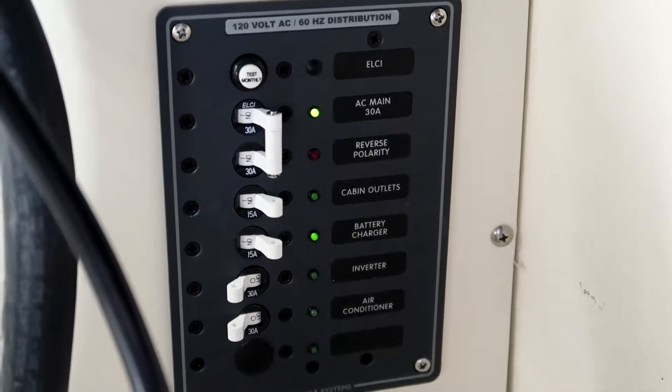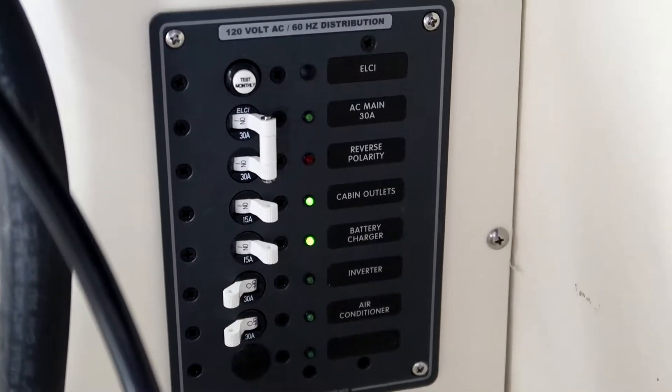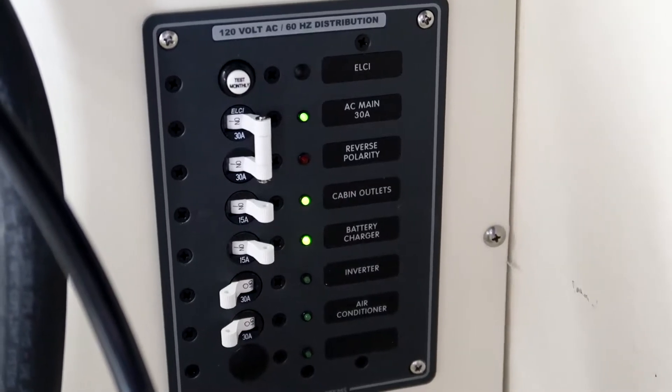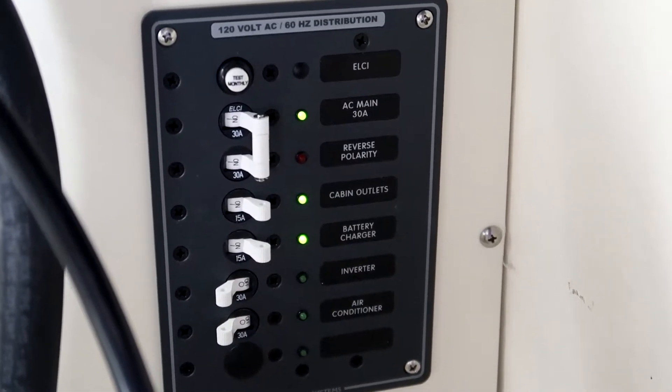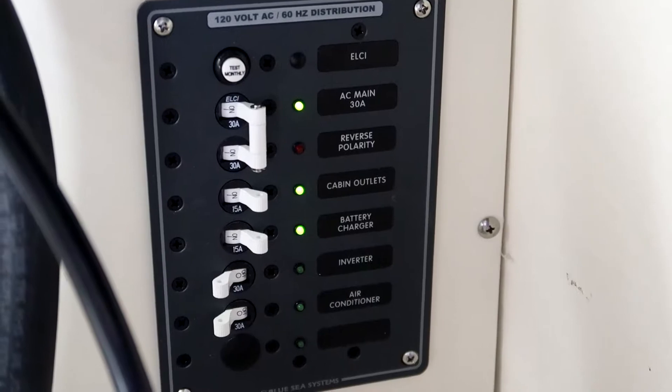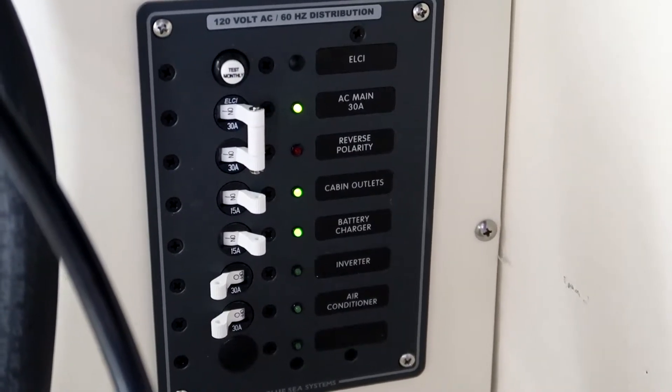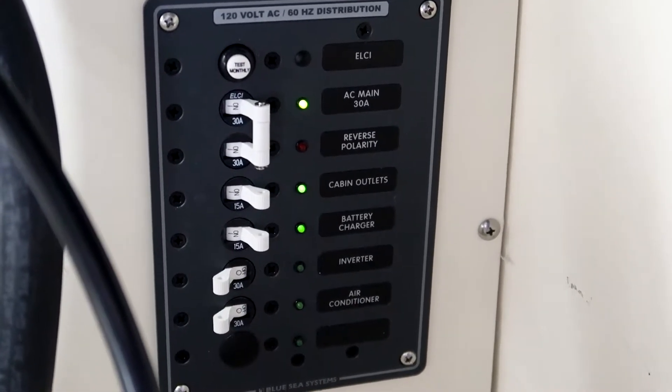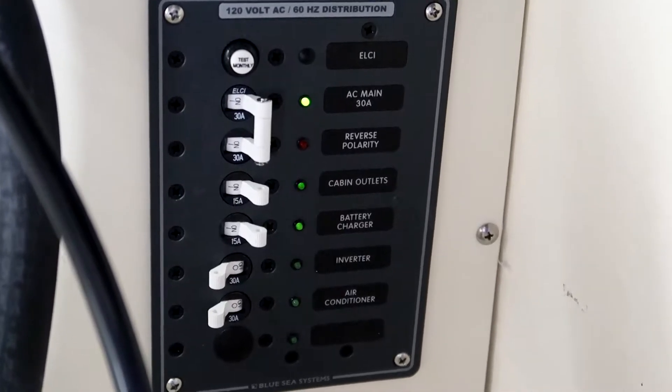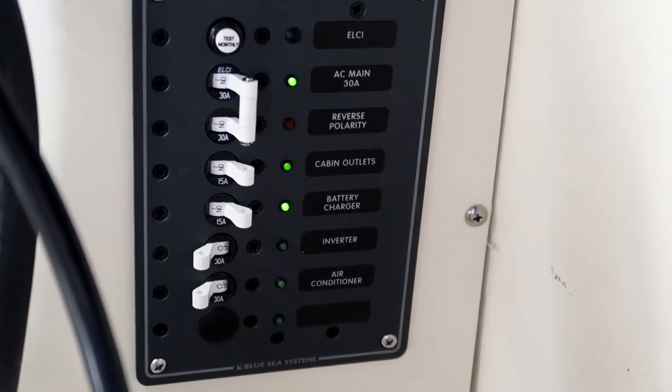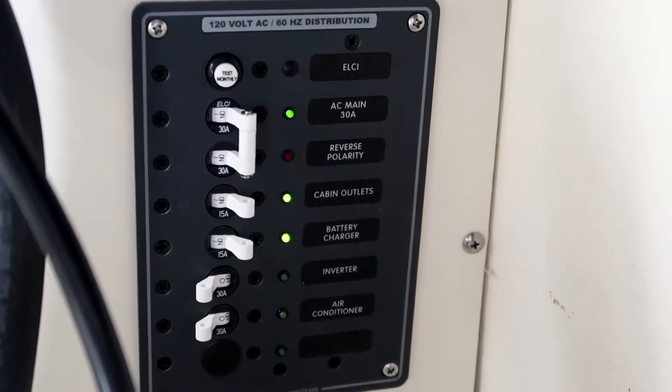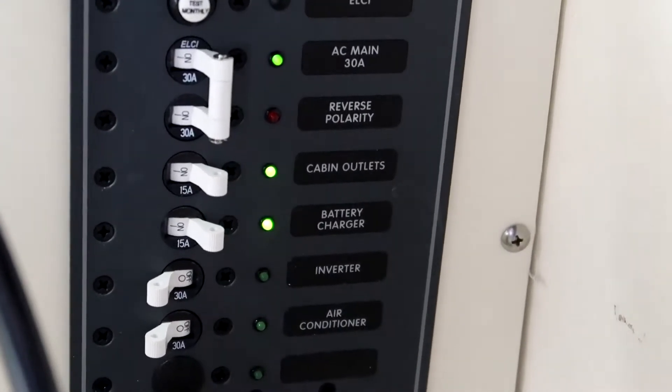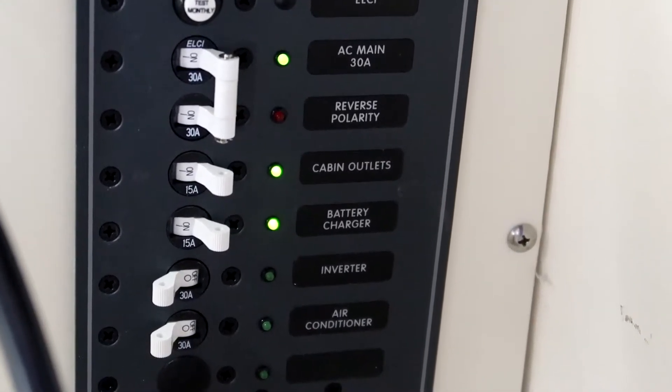So right there is my Blue Sea AC panel. The very top one is the circuit breaker that you're supposed to test monthly. The next one is the main 30 amp power coming in. I did cabin outlets, I'll show you that one. I did battery charger, so what that is is another outlet I put in so I can charge my batteries.